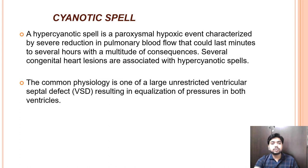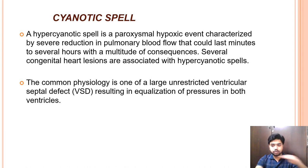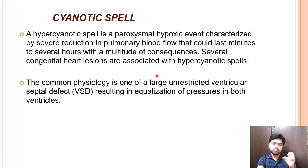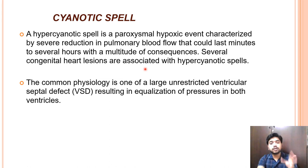A hypercyanotic or cyanotic spell is where a child turns completely bluish in color and becomes desaturated. The main pathophysiology is a severe reduction in pulmonary blood flow, which can last from several minutes to hours with a multitude of consequences — including death if the spell doesn't revert. The cycle keeps on going, and at some point we have to break it; sometimes it regresses spontaneously.